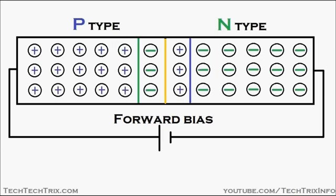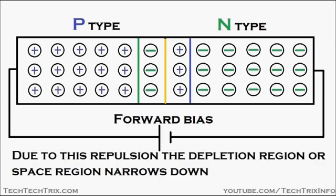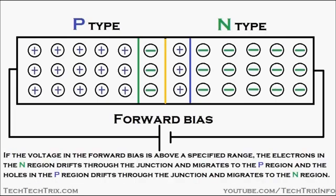You can see the junction is shrinking. Due to this repulsion, the depletion region or the space charge region narrows down, as you can see in the animation. If the voltage in the forward bias is above a specified range,